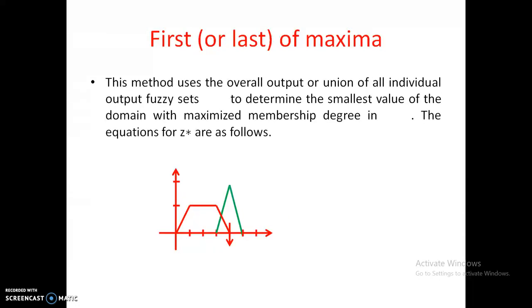The next method is first or last of maxima. Here we need to find the first value of the maximum and the last value of the maximum. But the figure shown here has only one maximum value, so it is simply shown that value is z star.